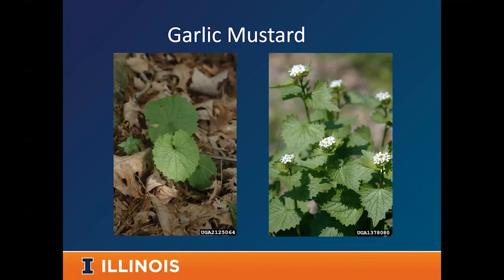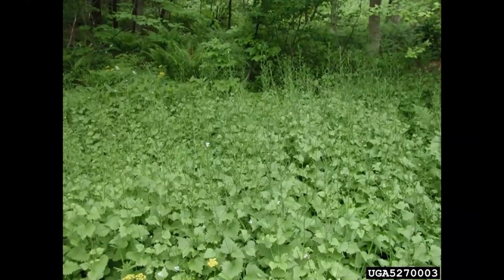Garlic mustard is well known and found throughout the state — it's a major target for spring garlic mustard pull workdays. It is really impactful to our spring wildflowers because it grows at the same time in the same habitat. It is a biennial: the first year it looks like a small rosette, and the second year it forms a flowering plant two to four or five feet tall with little white flowers, giving way to tall spikes with little seed pods. The plant smells like garlic — crush it and you'll know. It is allelopathic: it can exude chemicals from its roots that slow the growth of other plants to give it a competitive advantage.